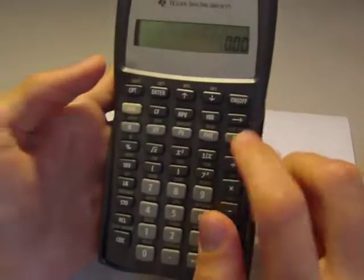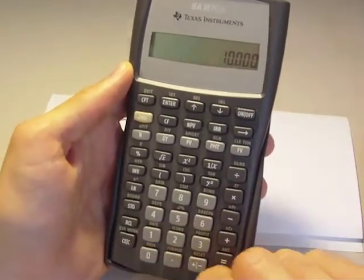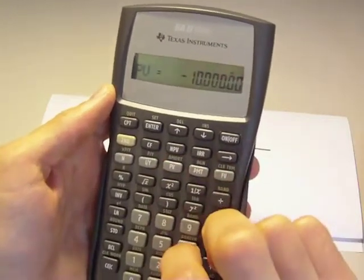And our starting amount is $10,000. So I'm going to type $10,000. And I want to make that negative. And present value. There we go.